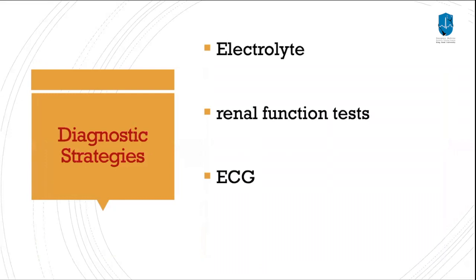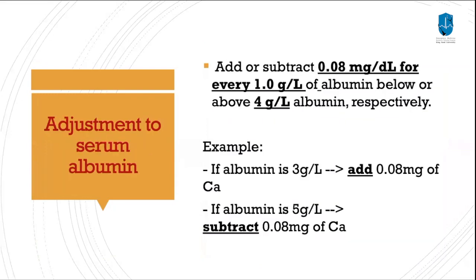The diagnostic strategy includes electrolytes, renal function tests, and ECG. We also need to remember how to adjust for serum albumin, since albumin interferes with calcium concentration in the blood. If albumin is less than or greater than 4, we need to adjust the calcium. If it's less than 4, we add 0.08 to get the exact calcium number. If it's more than 4, we subtract 0.08 to get the proper calcium concentration.